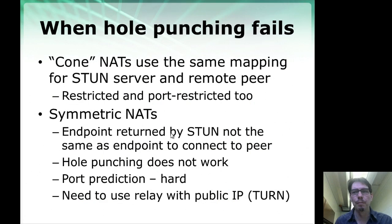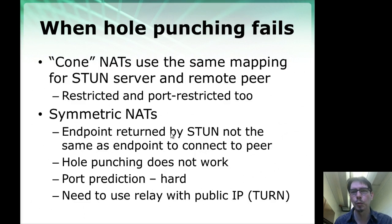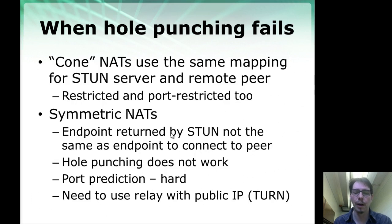This works many times but sometimes it fails. It works for cone NATs — NATs that use the same mapping when talking to a different peer — including restricted and port-restricted cone NATs. But symmetric NATs use a different mapping for the STUN server and for the other endpoint, so this approach does not work. You would have to predict a port to try to make it work, and port prediction is difficult.